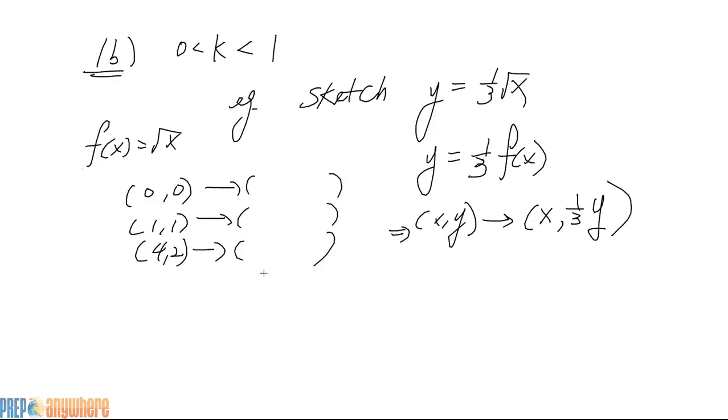So what are the new points now? The x doesn't change. What happens to y? They all get multiplied by a third, and 2 over 3, right?